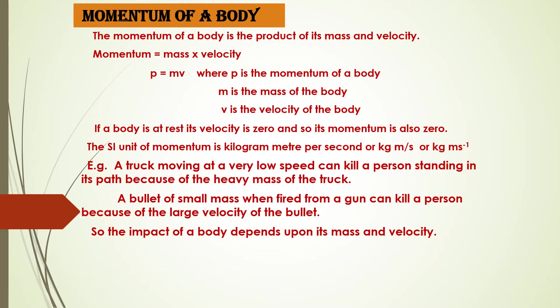If a body is at rest, its velocity is 0, so its momentum is also 0 because p = m × v. The SI unit of momentum is kilogram meter per second, which can be written as kg m/s or kg m s⁻¹.